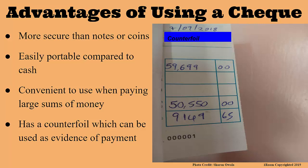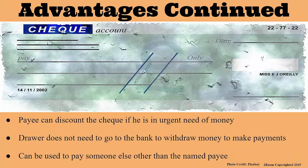And what is a counterfoil? When a cheque is torn from the cheque book, there is a piece of it that remains in the cheque book as proof. Another good thing about cheques is that if the payee needs the money urgently, then he or she can get it from the bank by discounting the cheque.